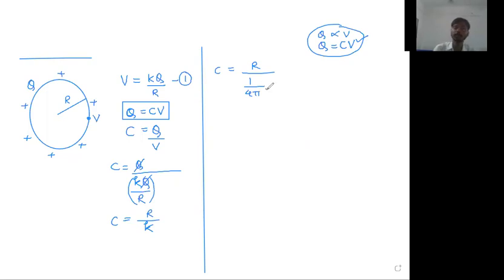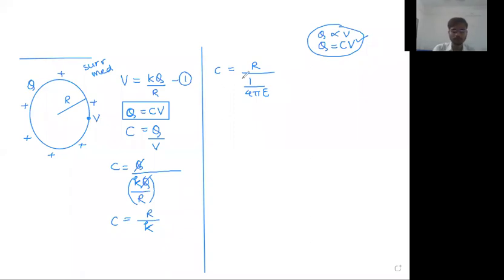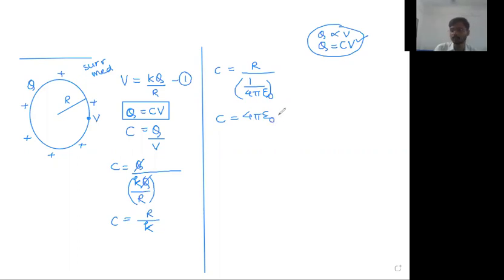We write epsilon zero when the surrounding medium of this conductor is vacuum. But if the surrounding medium is not vacuum, you have to write epsilon. So C is equal to 4 pi epsilon zero in the numerator. If there is a medium, you have to write epsilon. Let us initially write epsilon zero, and then we will make a special note for what to do if there is a medium, multiplied by R.